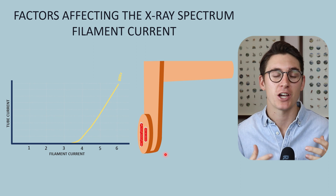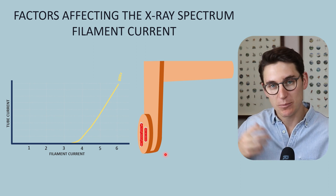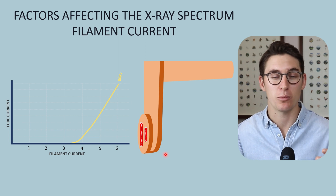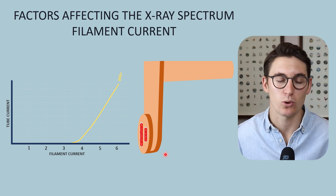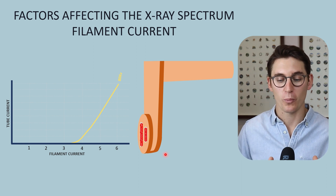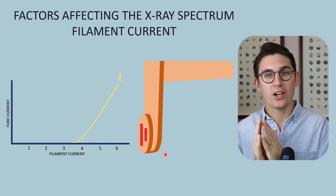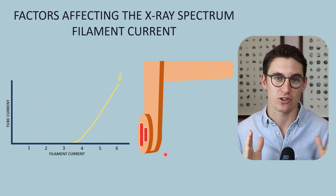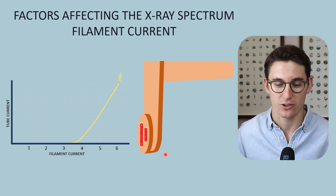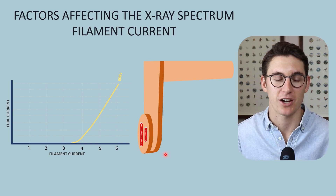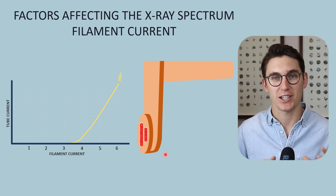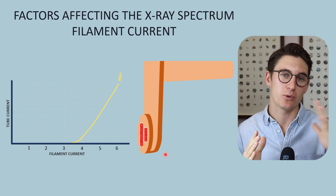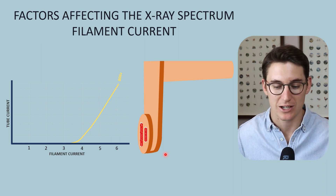The more current we run through that filament, the more heat is generated in the filament coil and the more electrons that are available to be accelerated towards our anode. We are not changing the energy of those electrons at the surface of our cathode by changing our filament current. The only thing we are changing is the number of electrons available — it's our tube potential that will then accelerate those electrons towards our anode.